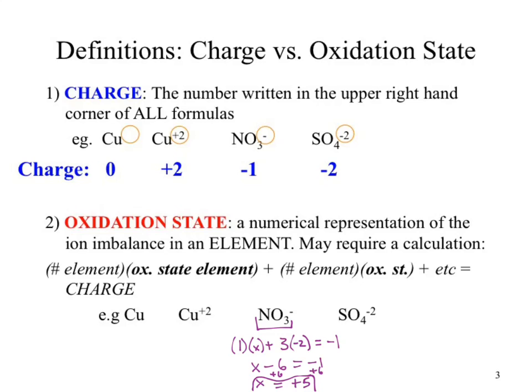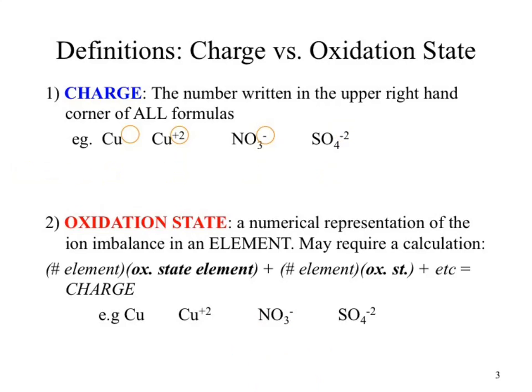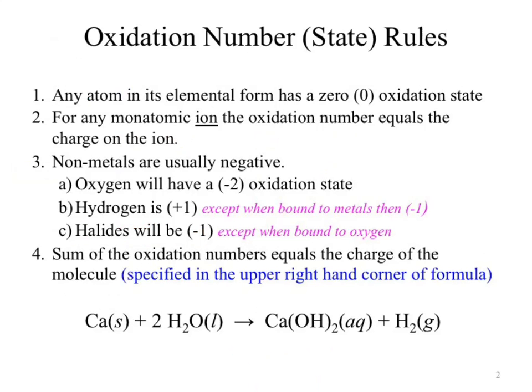I'm still kind of confused — why did you put for the oxidation state of oxygen negative two? Our oxidation state rules: number three A is oxygen is a negative two oxidation state. If you don't know that, can you solve the problem? No. So some information must be specified for you. That is one of the rules that you absolutely must know — if you don't know that, you can't solve it.